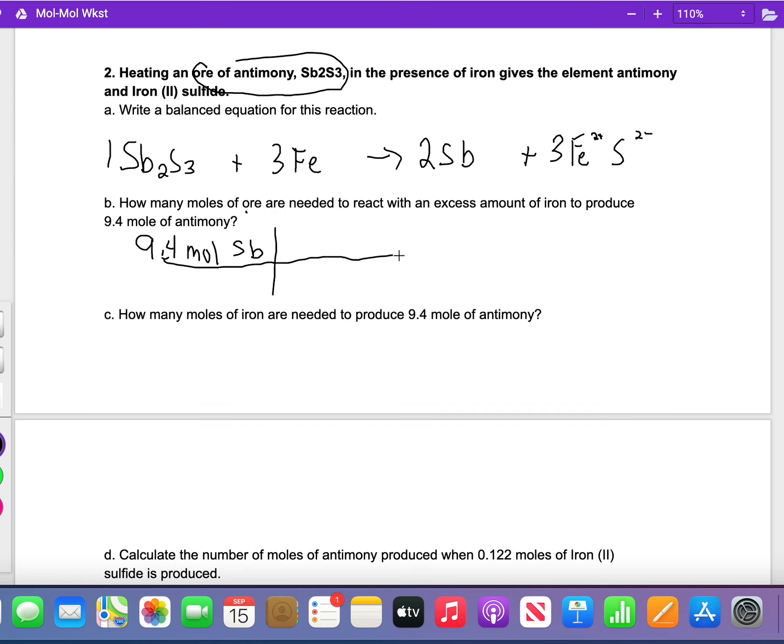If we have moles here, we have to have moles here. We're going to get it from the balanced equation, we're going to use the mole ratio from the balanced equation. So we got moles Sb, so we'll go to moles Sb.